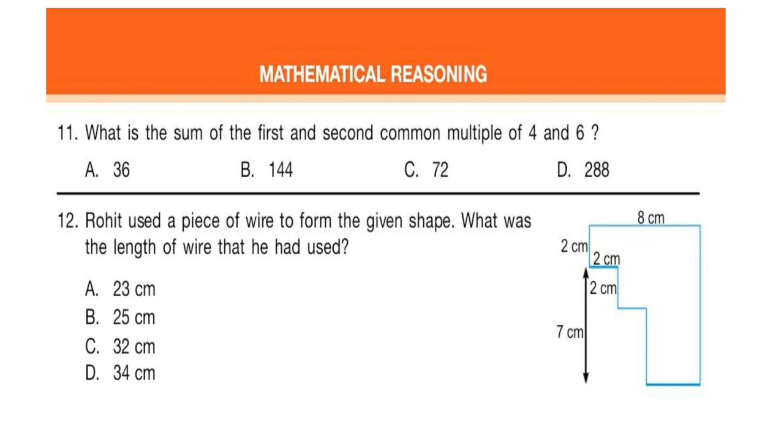Question 11: What is the sum of the first and second common multiple of 4 and 6? Look at the options and select your answer. Question 12: Rohit used a piece of wire to form the given shape. What was the length of wire that he had used?